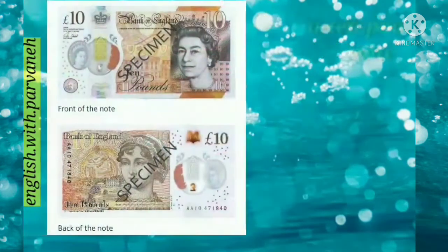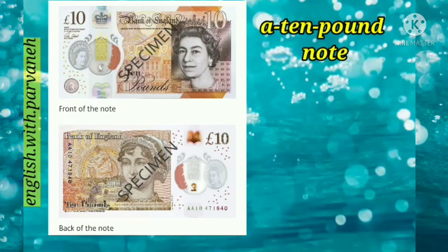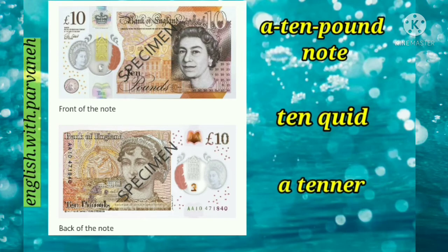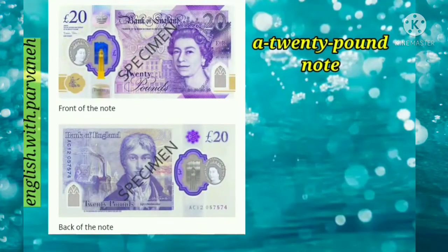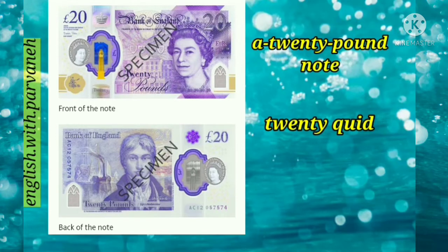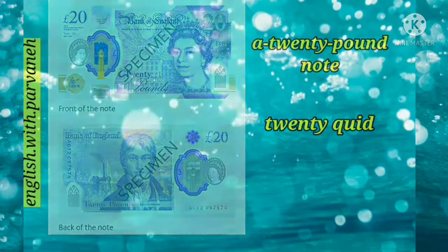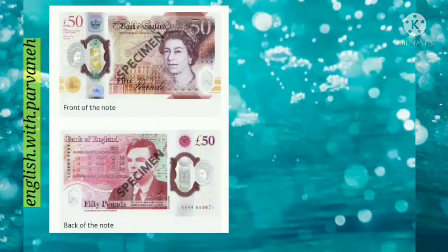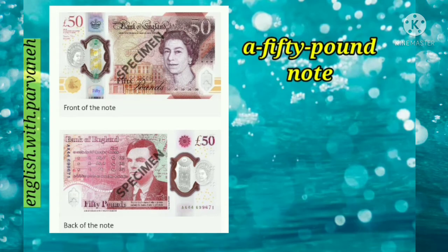Next, a ten pound note, or ten quid, or a tenner in slang. After that we have a twenty pound note, or twenty quid, but we don't call this a twenty like a fiver and a tenner. After that, the highest one is a fifty pound note, or fifty quid, or we also call it a fifty.